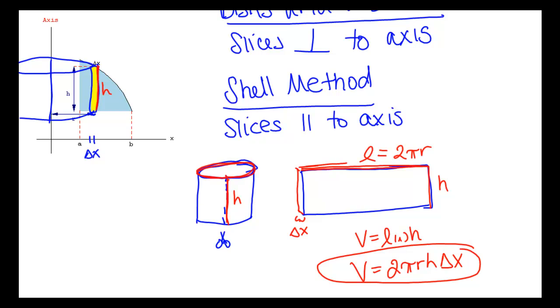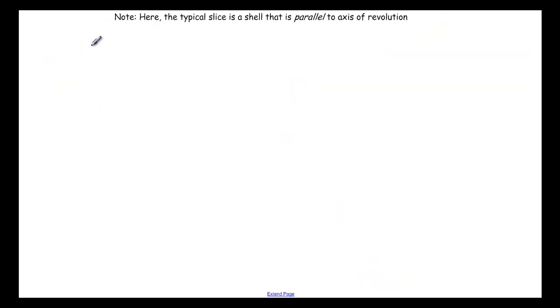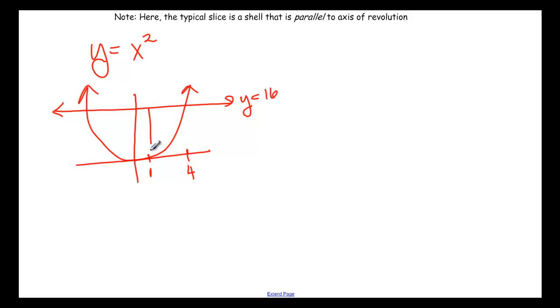Okay, so let's look at how that plays out. What if we had y equals x squared? And we wanted to revolve that region from, let's say, from 1 to 4 below the line y equals 16. So that would be this region right here. Let's say we wanted to revolve that around the y-axis.